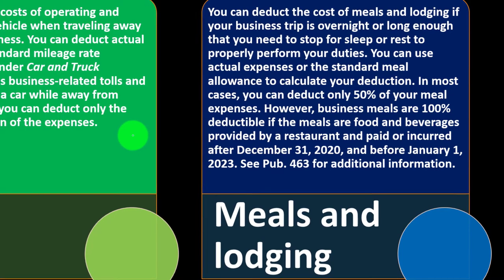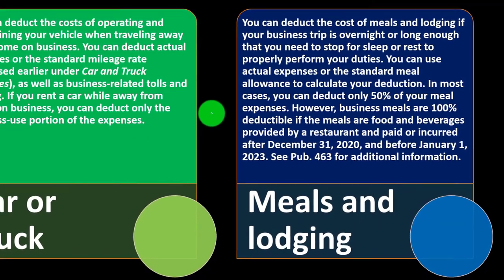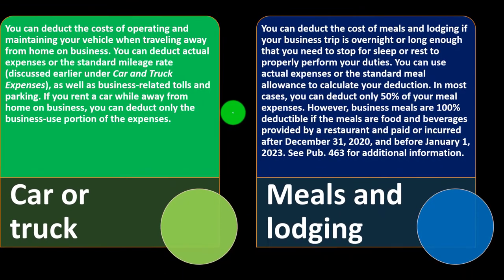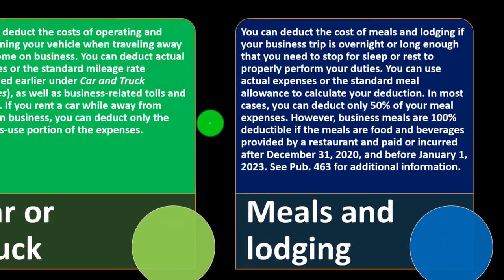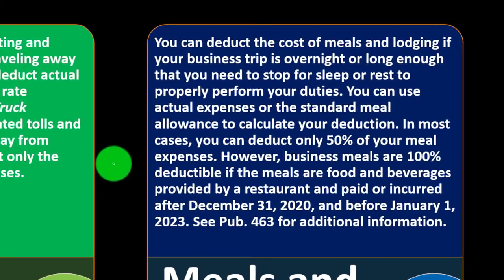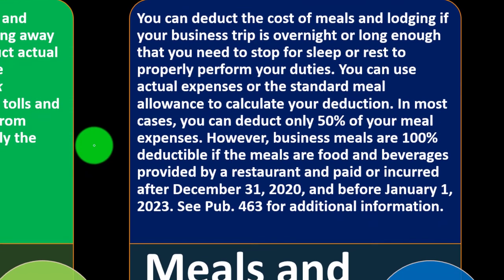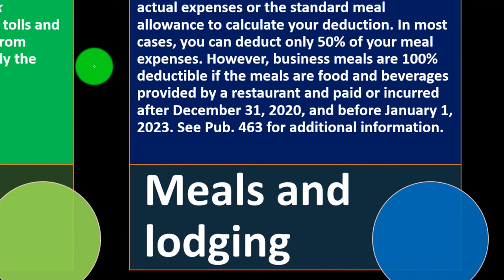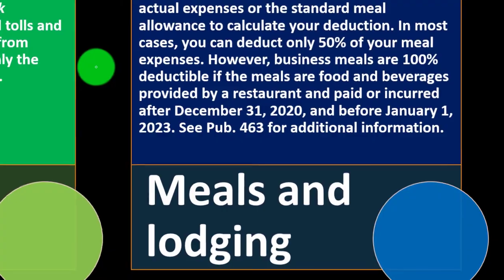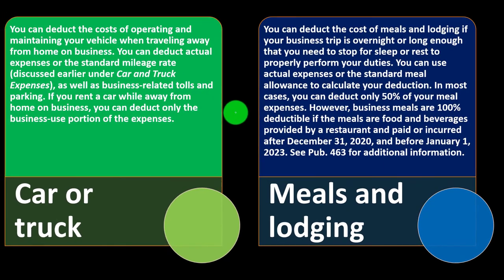The 100% restaurant meal deduction applies to amounts paid or incurred after December 31, 2020, and before January 1, 2023. See Publication 463 for additional information. Meals can be tricky — they used to be 50% for meals and entertainment, then entertainment was restricted, and now meals can be either 50% or 100% depending on the situation. The complexity arises because everyone needs to eat, so determining how much of a meal is business-related requires careful consideration.